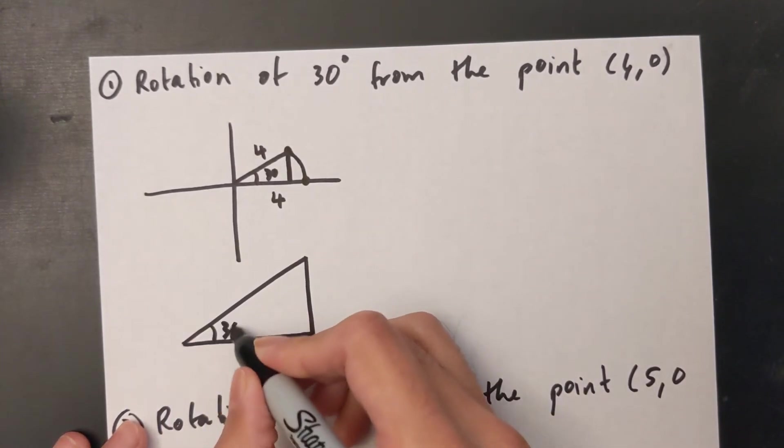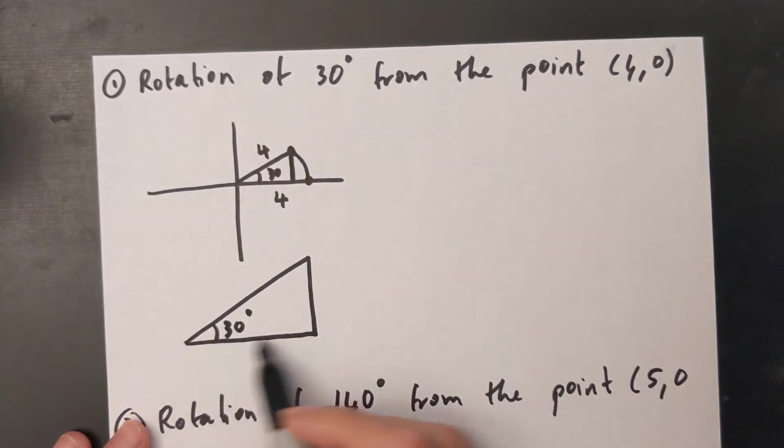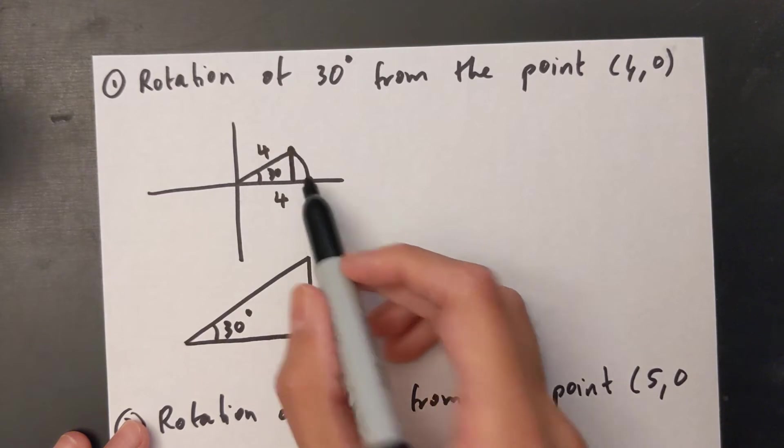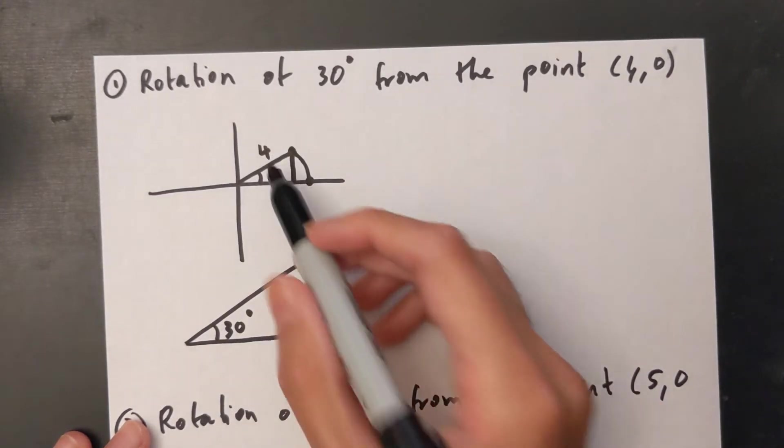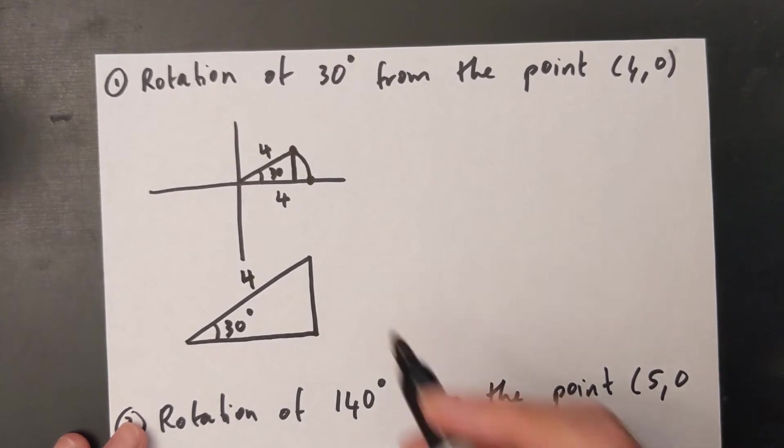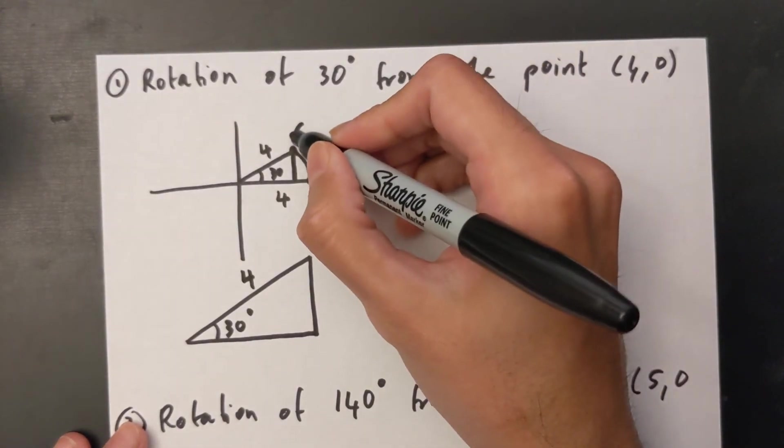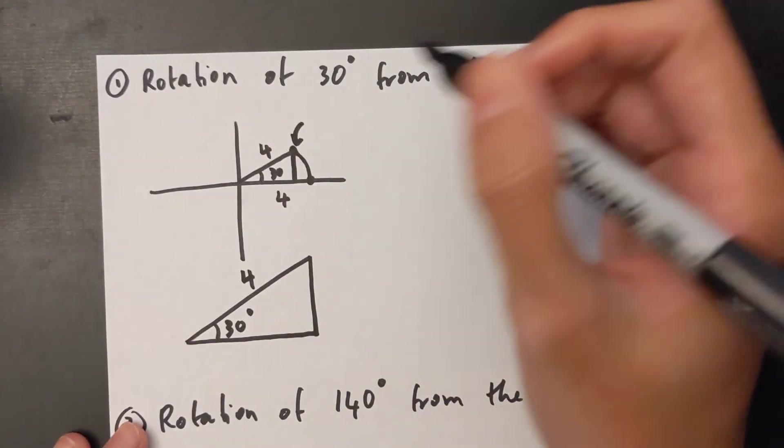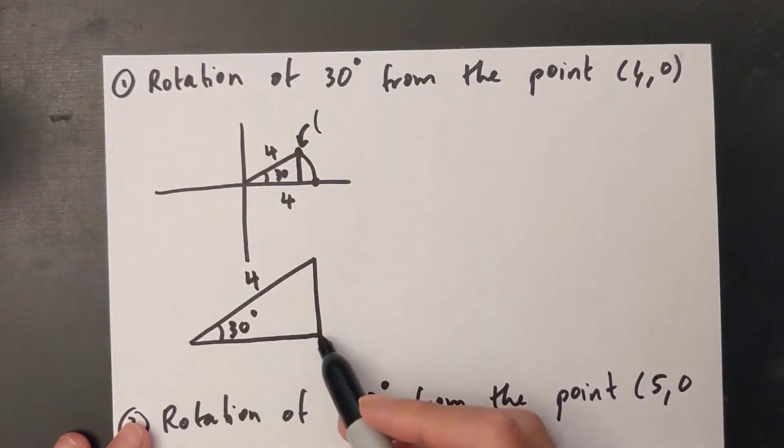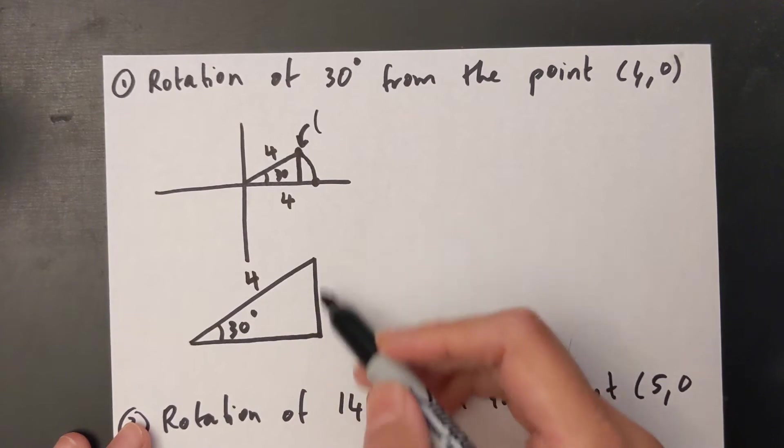So I have 30 degrees over here. The bottom side is not 4—that's the whole side with the extra there. So the bottom side is not 4, but I know that the hypotenuse is 4 and now I need to find the coordinates of this new point. If I need to find the coordinates of this new point, I need to find this side here and this side over here.